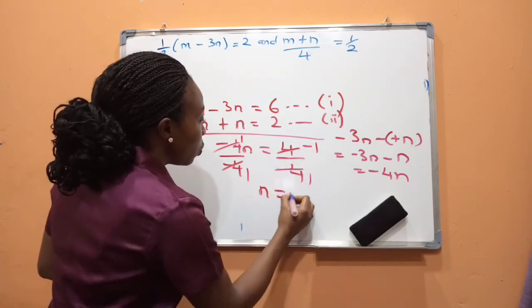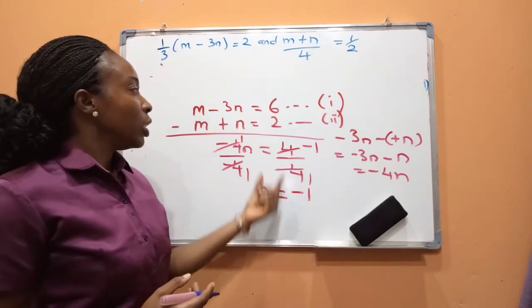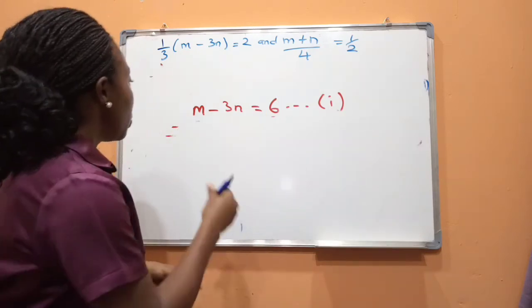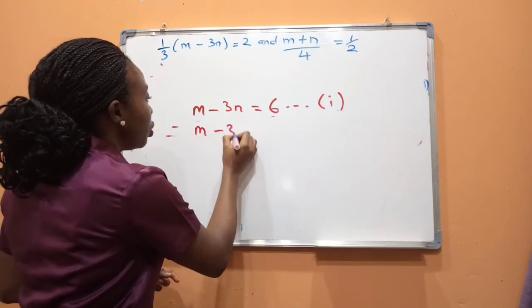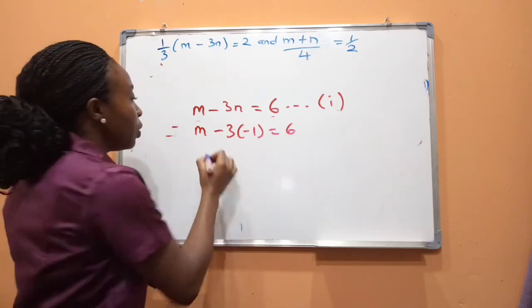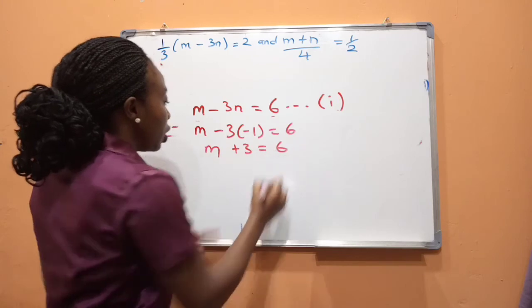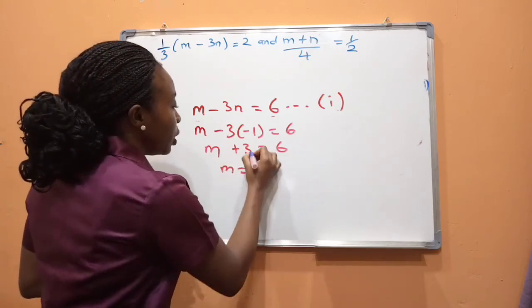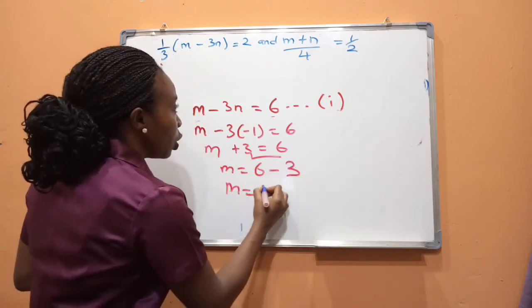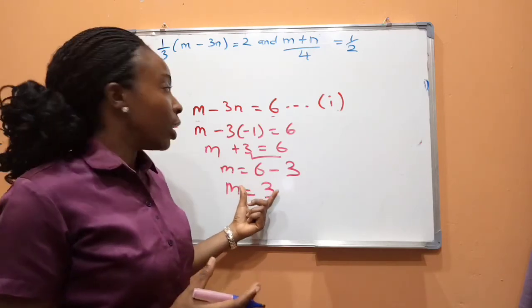Substituting n = −1 into equation 1: m − 3(−1) = 6, which gives m + 3 = 6. Therefore m = 6 − 3 = 3. We have successfully found both values: m = 3 and n = −1.